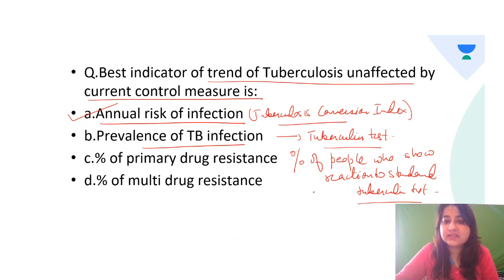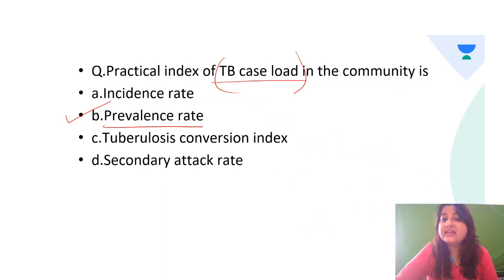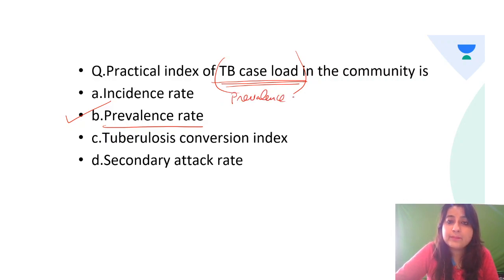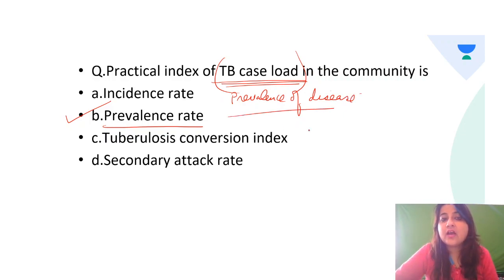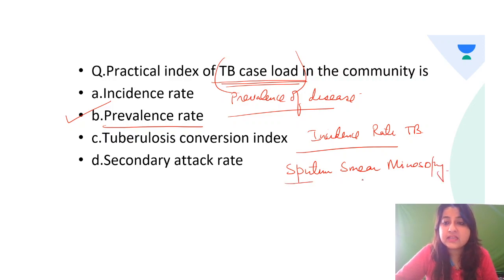So prevalence of TB infection is the percentage of people who show a reaction to the standard tuberculin test. If we are positive, it means we have been exposed to TB bacilli. The prevalence of TB infection in India is approximately 40%. Now, the practical index of TB case load — what we're asking is the prevalence of TB disease. To find prevalence or incidence of disease, we do a sputum smear microscopy, which is the epidemic marker of tuberculosis disease.